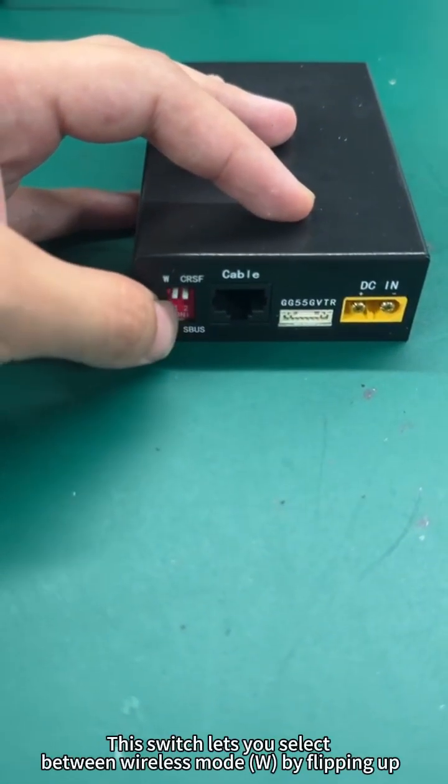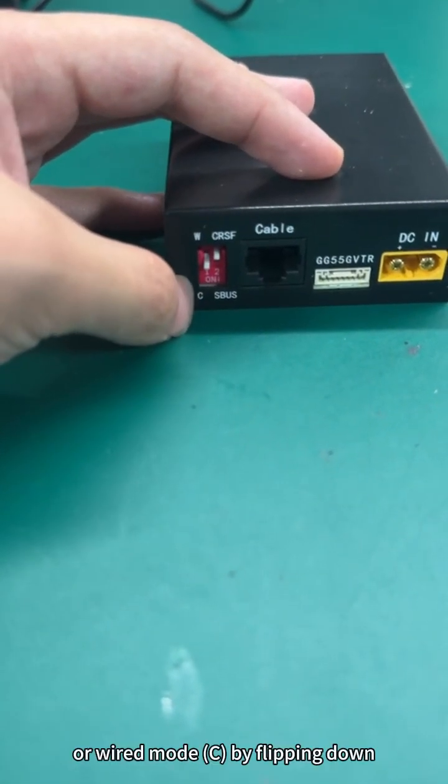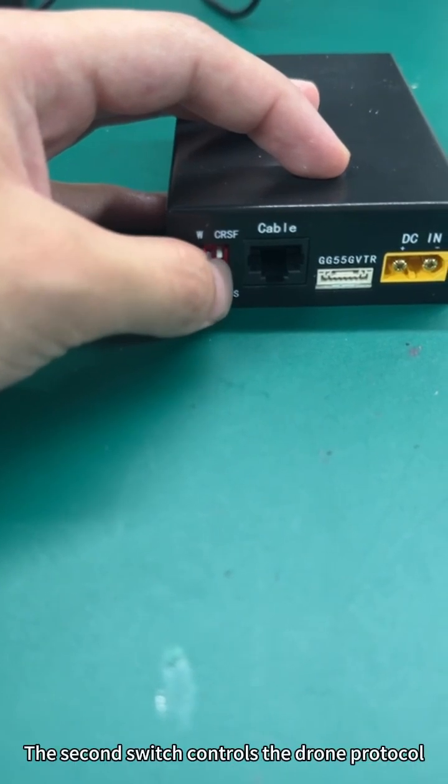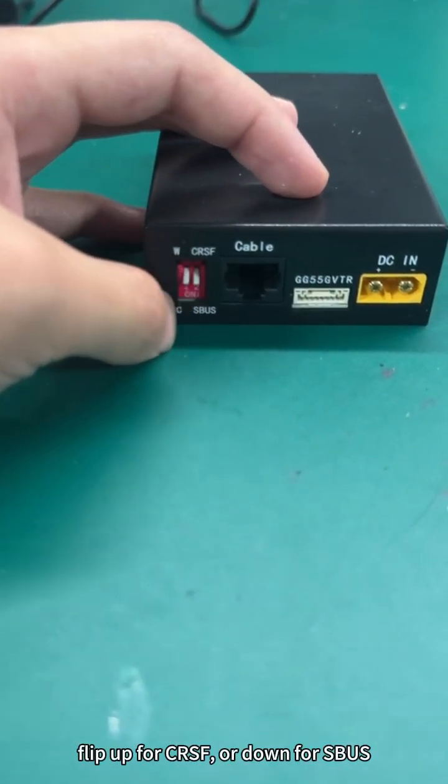This switch lets you select between wireless mode by flipping up or wired mode by flipping down. The second switch controls the drone protocol: flip up for Cursive or down for Spy Eye.